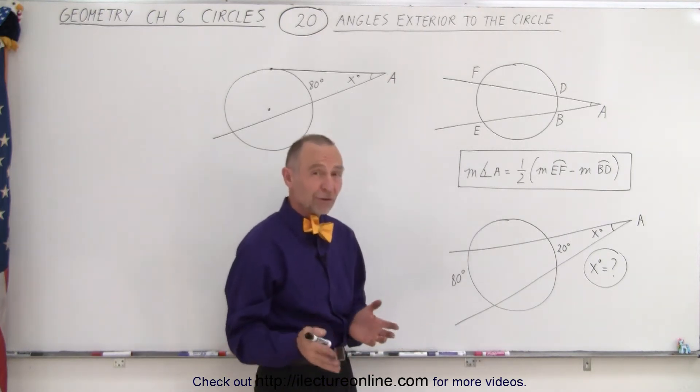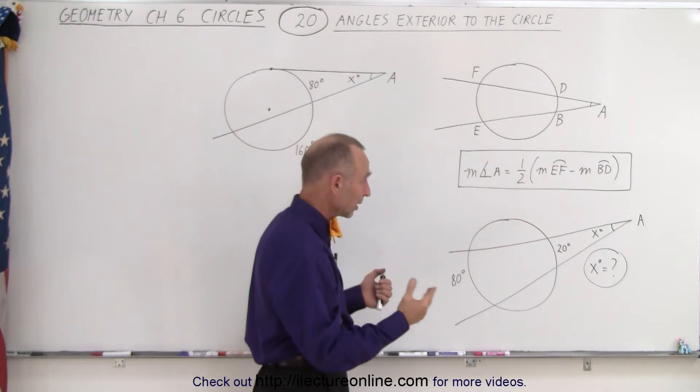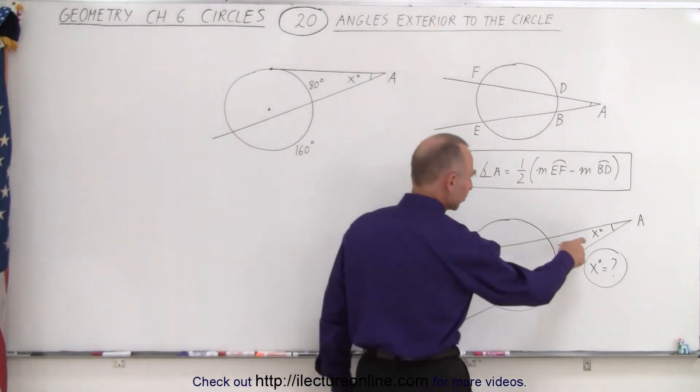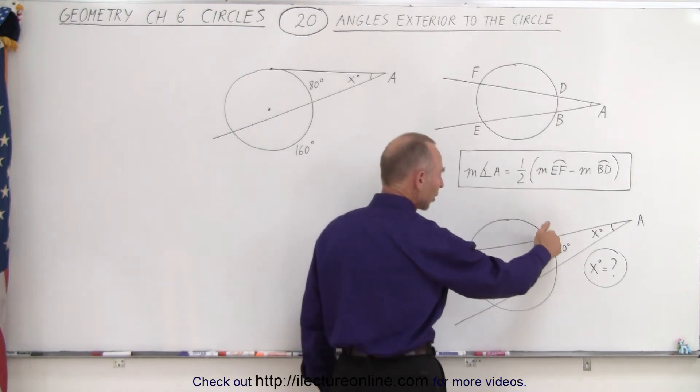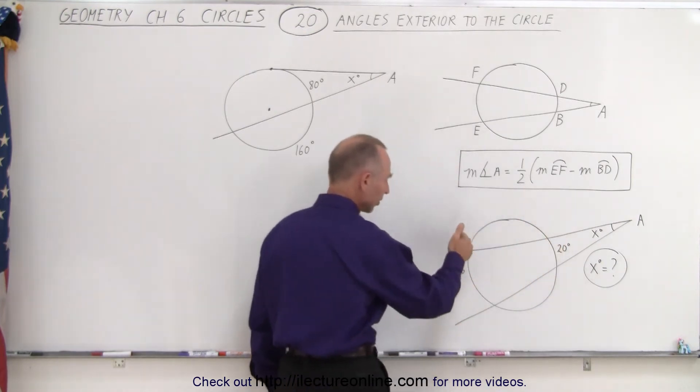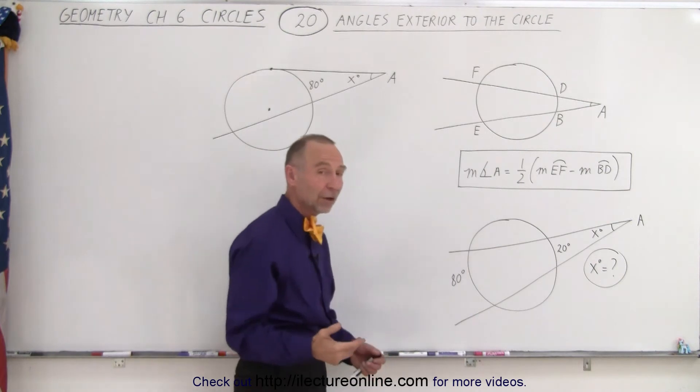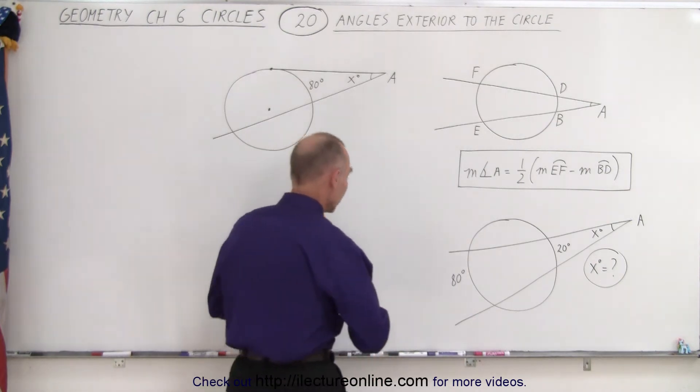So the best way to understand that theorem is to do an example. Here we have an example where we're trying to find the measure of angle A, which is x degrees. We can see that the intercepted arc on this side is 20 degrees, and the intercepted arc on this side is 80 degrees.